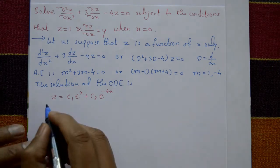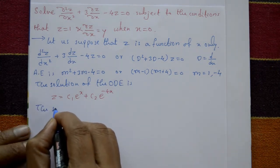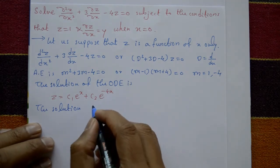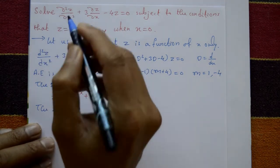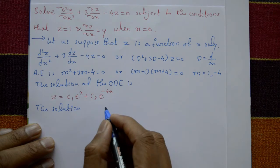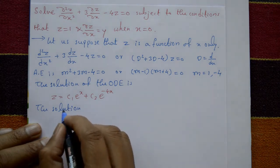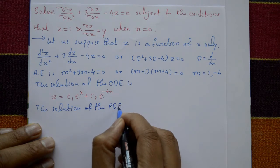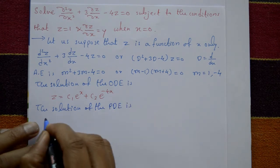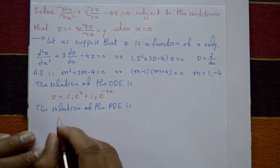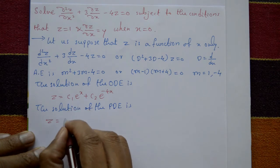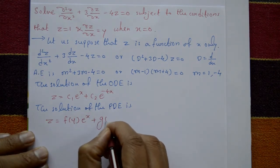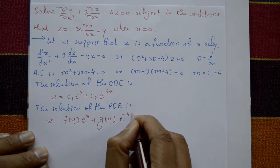Now write the solution as a PDE. Replace constants c₁ and c₂ with arbitrary functions f(y) and g(y), since ∂z/∂x involves y. The solution of the partial differential equation is z = f(y)·eˣ + g(y)·e^(−4x). Call this equation number 1.